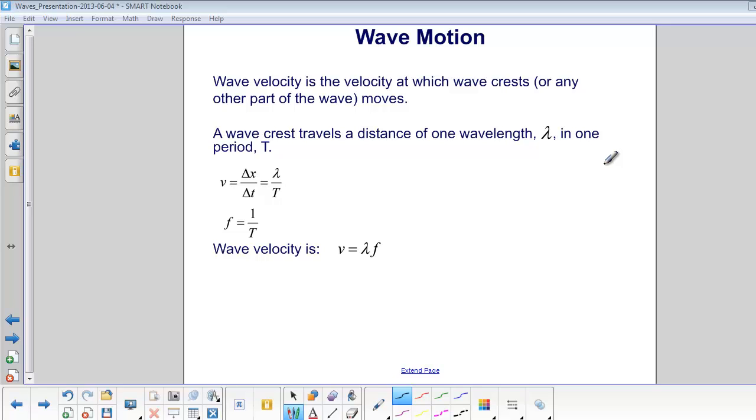Wave velocity is the velocity at which wave crests or any other part of the wave moves. A wave crest travels a distance of one wavelength in one period.